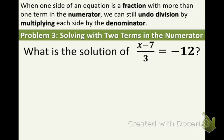When one side of an equation is a fraction with more than one term in the numerator, we can still undo the division by multiplying each side by the denominator. Let's take a look at example 3 below.